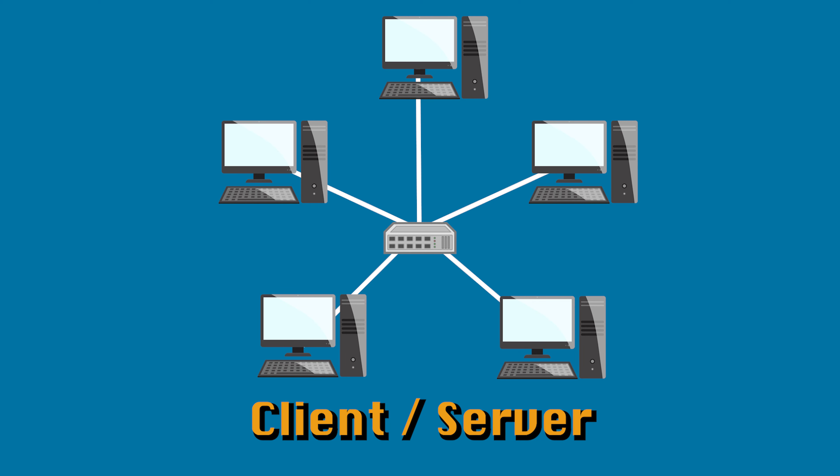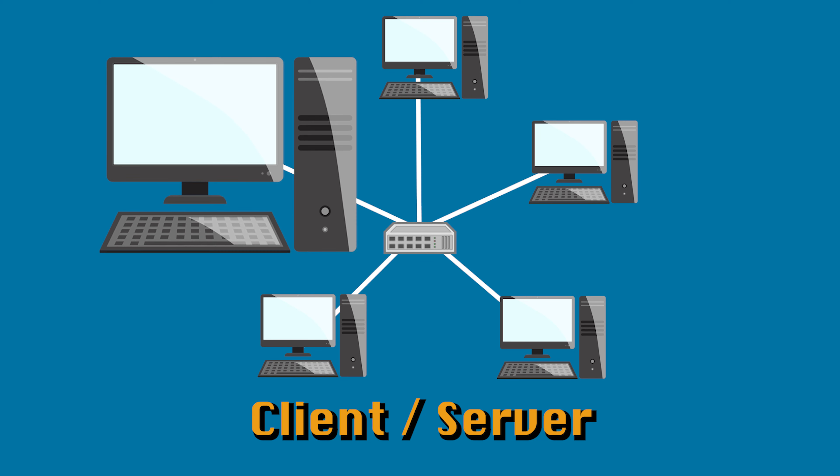Last but not least is architecture, which more closely defines the relationship between computers on a network rather than how they're organized — which is what topology is. In a client-server architecture, one computer called a server controls the access that other computers have to shared resources like storage space, documents, email, and printers. These computers are the clients. The client machines — those that talk to the server and receive data from it — usually do not communicate with each other directly.